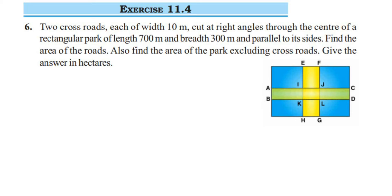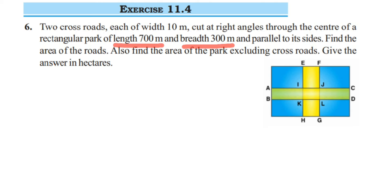Here's a question from exercise 11.46 — this is from the perimeter and area chapter of class 7. The question is: two crossroads, each of width 10 meter, cut at right angles through the center of a rectangular park of length 700 meter and breadth 300 meter, parallel to each side. Find the area of the road, and also find the area of the park excluding the crossroads. Give the answer in hectares.